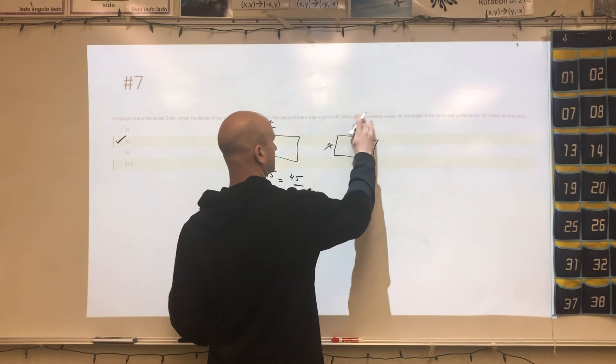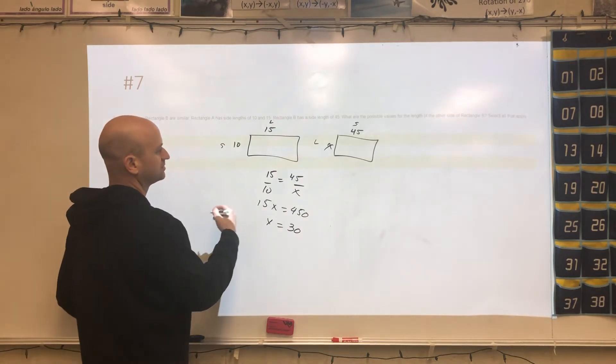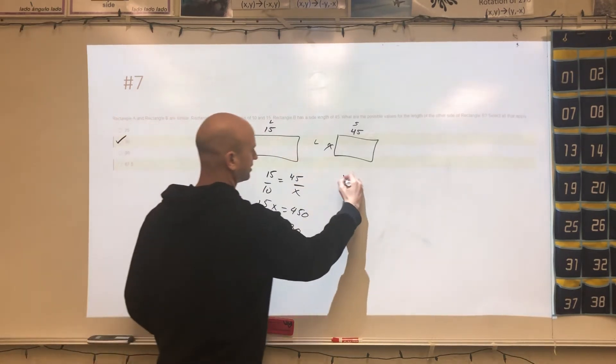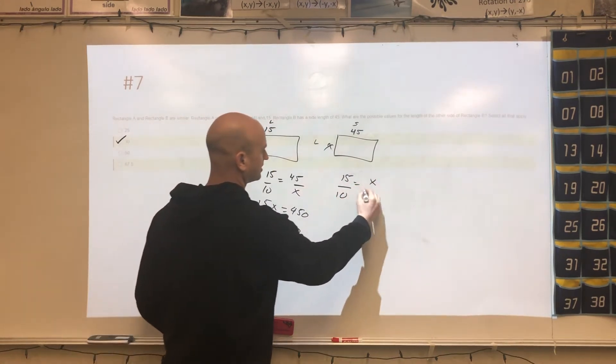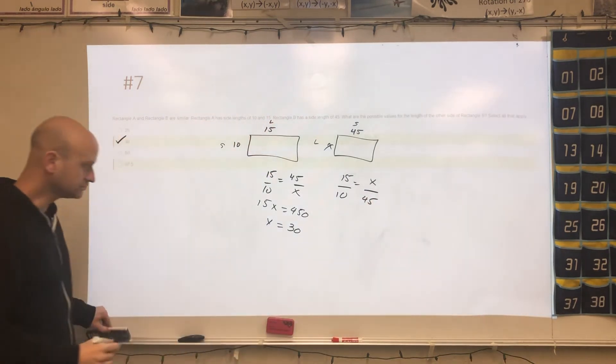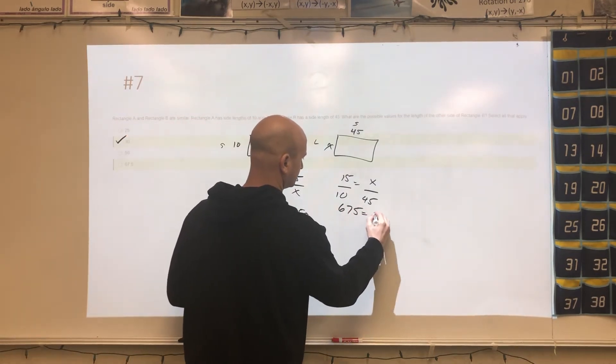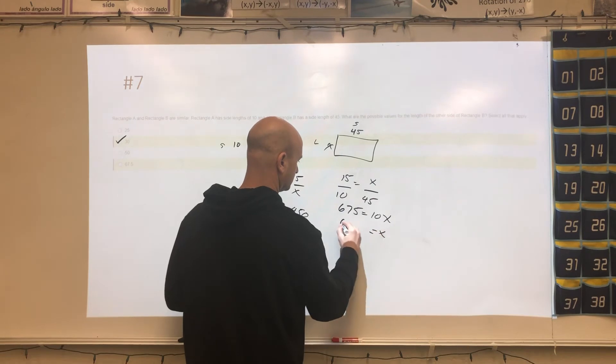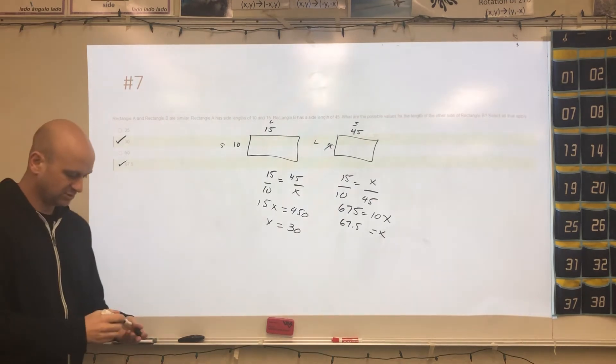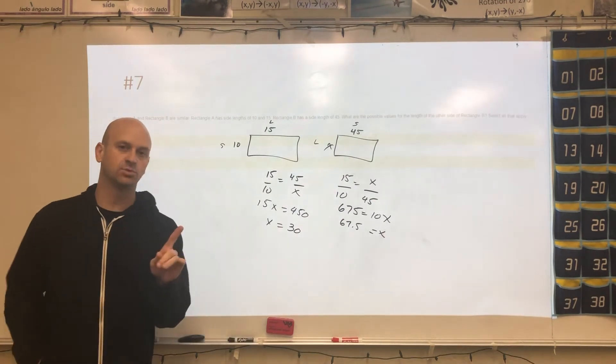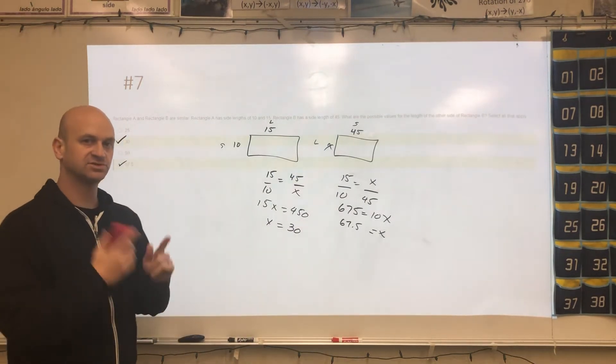Now if I switched it around, and this were the small and now this is long, it's going to change up our proportion. So in this case, 15 is going to partner up with X, and then 10 is going to partner up with 45. So I get 45 times 15, and I get 67.5 as my value. So most of you, if you got this one incorrect, you probably did one value, not both. So because they didn't tell you what value in the rectangle 45 was, you have to do two of those.